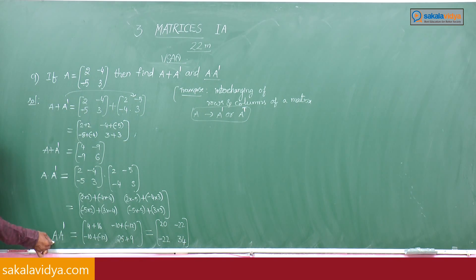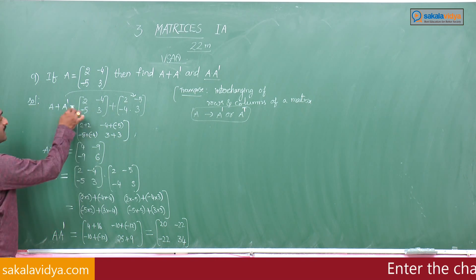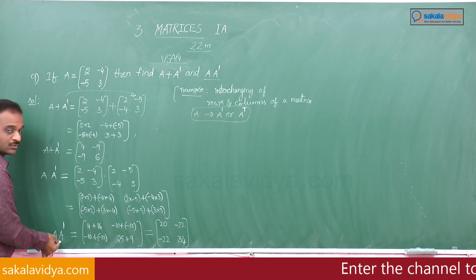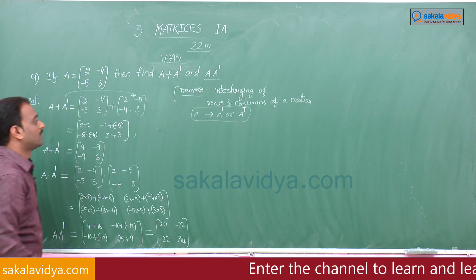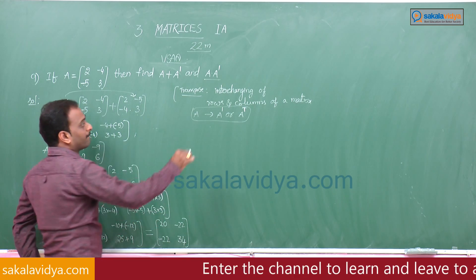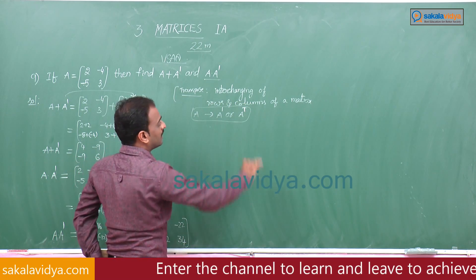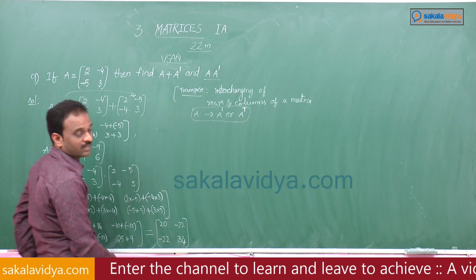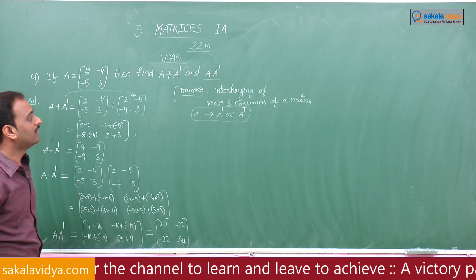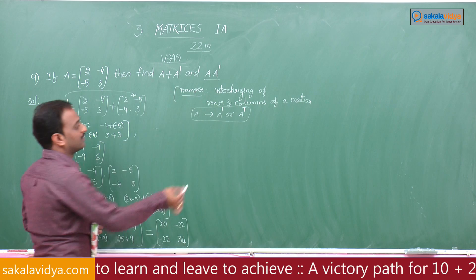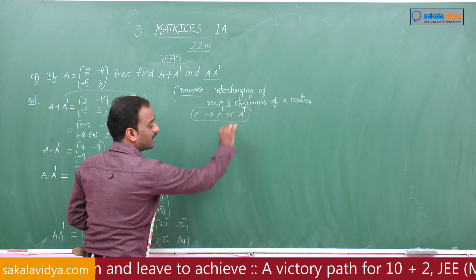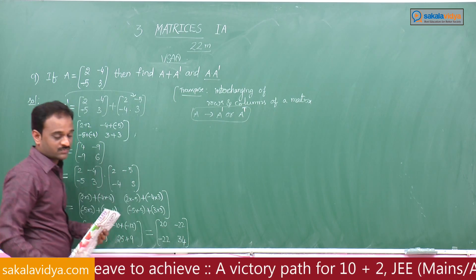Which gives A into A dash as [[20, -22], [-22, 34]]. Transpose is the interchanging of rows and columns of a matrix, denoted by A dash or A transpose.